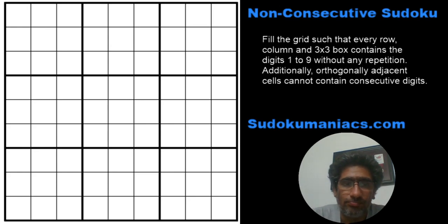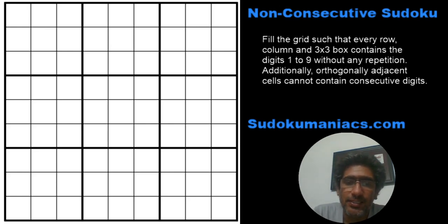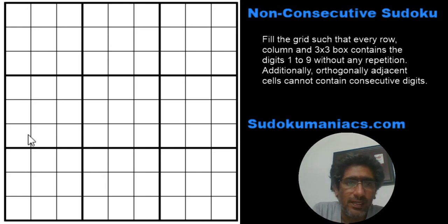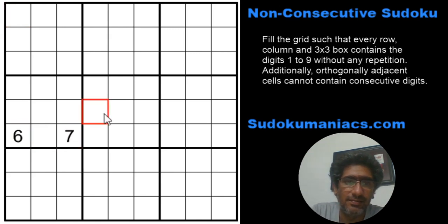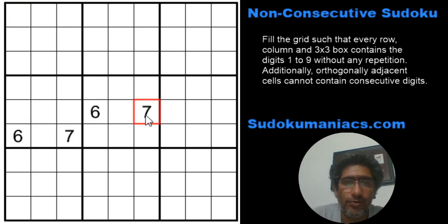So let's look at a blank grid. Now let's assume I had a 6 here, a 6 here, and a 6 and a 7. Most of you who are regular solvers would know these default techniques that we use.